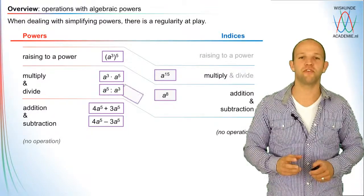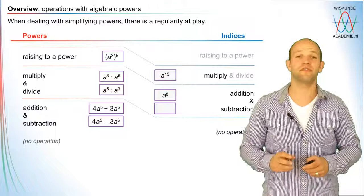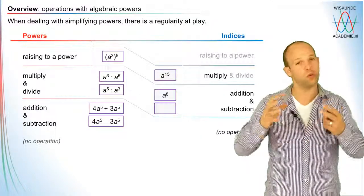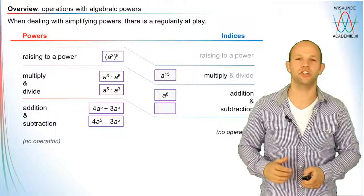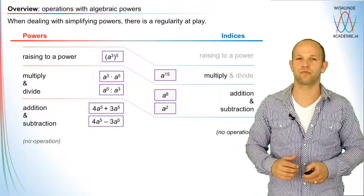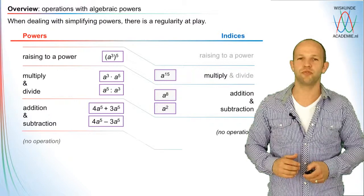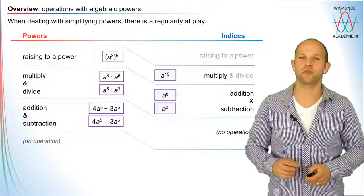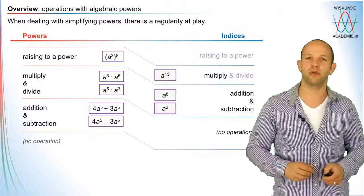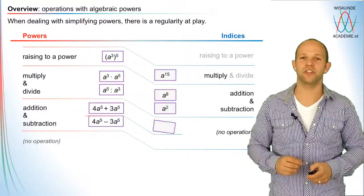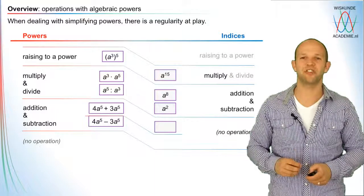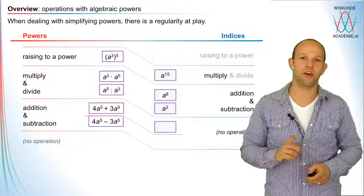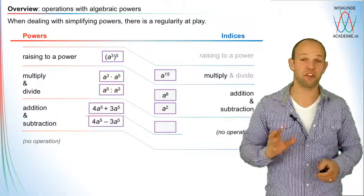You can do the same thing for dividing: a to the power 5 divided by a to the power 3 means you subtract the indices, going one step lower in the order of operations, giving you a to the power 2. Then for the group of addition and subtraction of powers — for example 4a to the power 5 plus 3a to the power 5 — when you add these up, there's no operation on the indices. The indices remain the same.